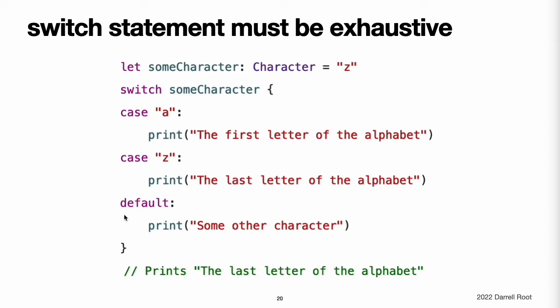This example uses a switch statement to consider a single lowercase character called some character. The switch statement's first case matches the first letter of the English alphabet, A, and its second case matches the last letter, Z. Because the switch must have a case for every possible character — not just every alphabetic character — this switch statement uses a default case to match all characters other than A and Z. This provision ensures that the switch statement is exhaustive.